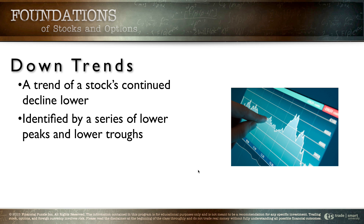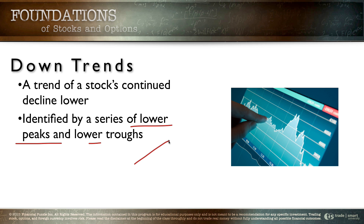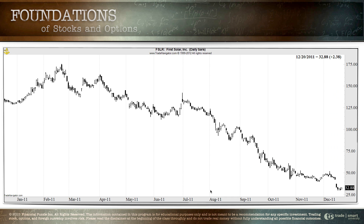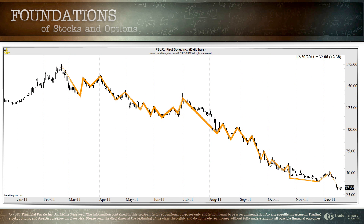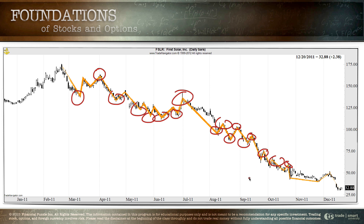If we take a look at a downtrend, what you'll find is a downtrend is simply the trend of a stock's continued decline lower, identified by a series of lower peaks and lower troughs. We've got our swing high, then our swing low — a lower high and a lower low, simply lower peaks and lower troughs. Take a look at First Solar here — you can draw your little circles and identify these are lower highs. Consequently, this is a downtrend. You've got lower lows making up the bottoms. For the most part you've got a predominant sequence of lower highs and lower lows.